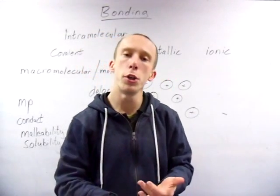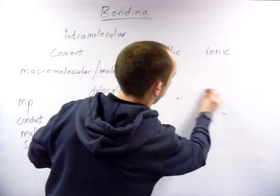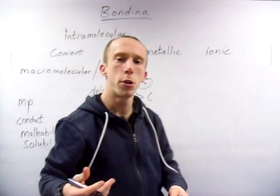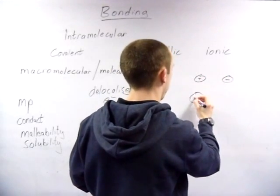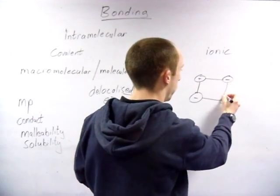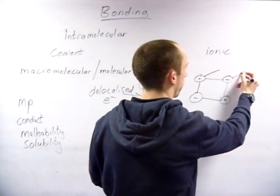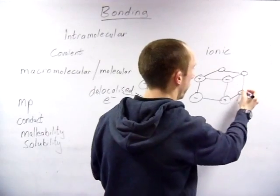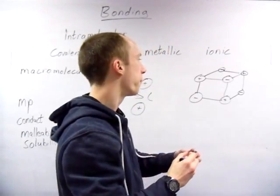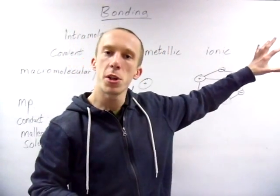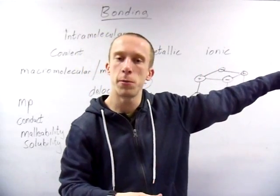Ionic only conduct when they are molten or dissolved. When they are solid, effectively in the lattice structure - you should be able to draw these as well by the way. Draw your flat square like that: positive negative, negative positive, so opposite charges are next to each other, extending into 3D. In there, the ions are held in a fixed position. So if they can't move, then the positive can't go to the negative electrode, the negative ion can't go to the positive electrode. So it doesn't conduct.